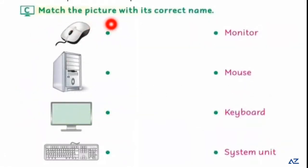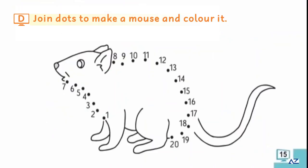Part C is match the picture with its correct name. You have to match the pictures with its names. Mouse, system unit, monitor, and the fourth part is keyboard. You have to match the spelling too. You have to remember.